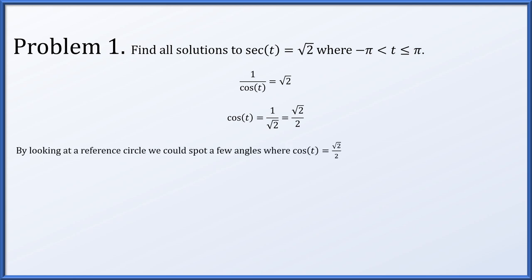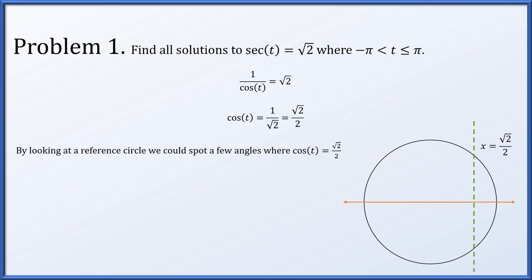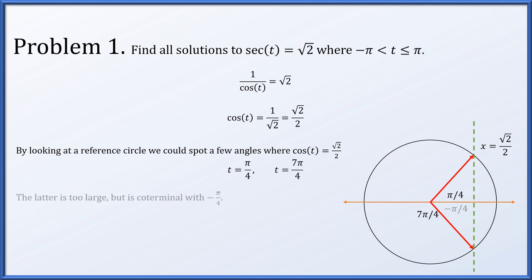Looking at a reference circle, we can spot angles where cosine of t equals root 2 over 2. On the standard unit circle, we're looking for the x-coordinate to take a certain value, so we draw the vertical line x equals root 2 over 2. There are two standard reference angles: pi over 4 and 7 pi over 4. However, 7 pi over 4 is larger than pi and outside our restriction, but it is coterminal with minus pi over 4, so we use that instead. The two solutions are plus or minus pi over 4.